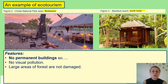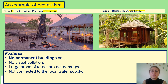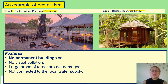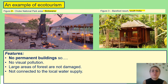Certainly in figure two, we can see that the buildings aren't connected to the local water supply. If you remember when we looked at Benidorm, we spoke about the high level of water usage for the resort and how that could have a negative impact on the area, especially areas which are particularly dry. These eco-tourist resorts are not connected to the local water supply, meaning there is enough water for the animals and the local indigenous people who live in these areas.